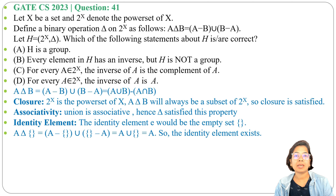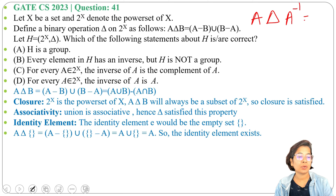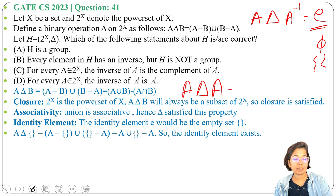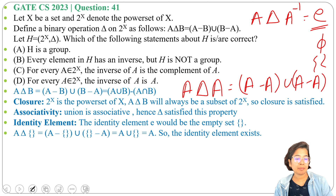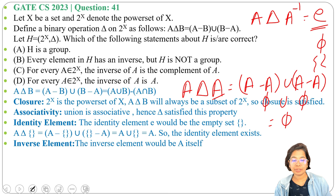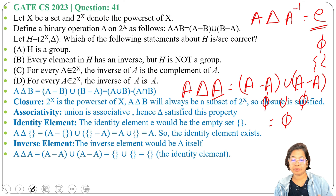Next is inverse. The inverse requires A del A_inverse to equal the identity element, which is phi (empty set). So with what element do we perform the delta operation on A to get the empty set? Let's check A del A: that is (A minus A) union (A minus A). A minus A is phi, and phi union phi is phi. So A del A equals phi, meaning A is its own inverse.